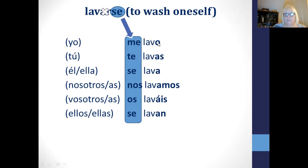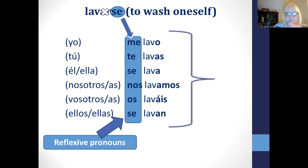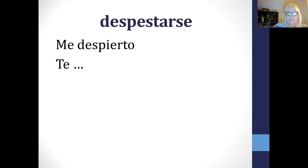If you remember, these are the reflexive pronouns. You take the AR off, keep the SE but move it to the front, and change it according to whoever you're talking about. If you've got O at the end of a reflexive verb, it relates to I — hablo, tengo, vivo, escucho. So reflexive pronouns plus present tense endings give you the reflexive verb. For despertarse, me despierto.